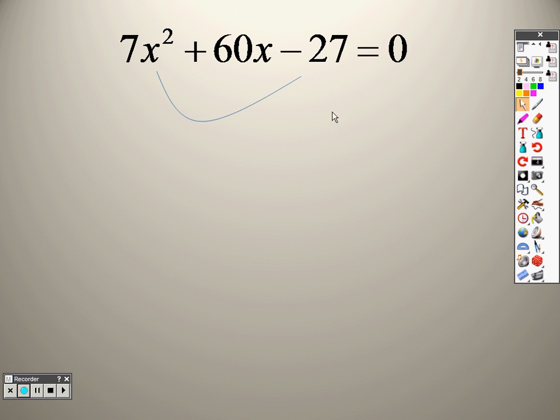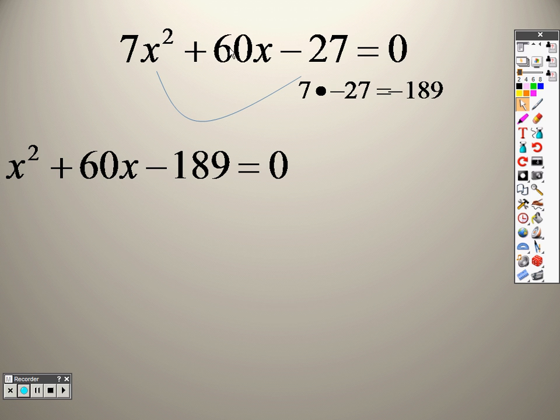So slide that 7, so 7 times negative 27 is negative 189. So it's x squared plus 60x minus 189 now. So what two numbers multiply to give you negative 189 that also add to give you 60? Well, negative 3 and 63 work.